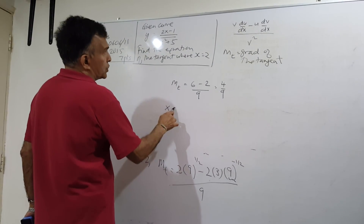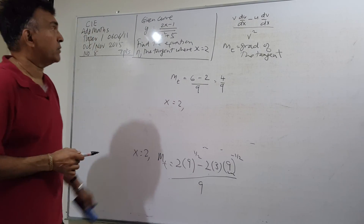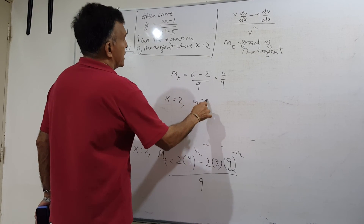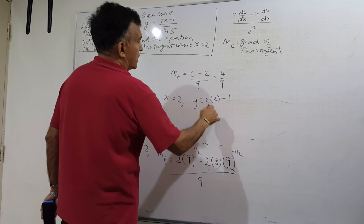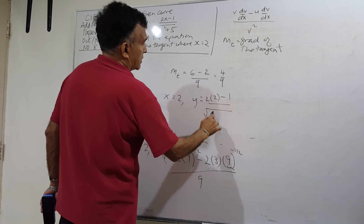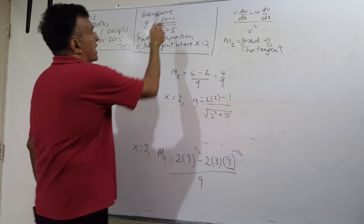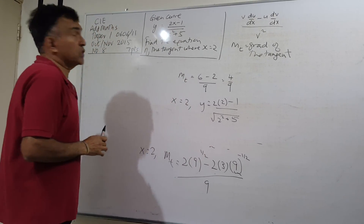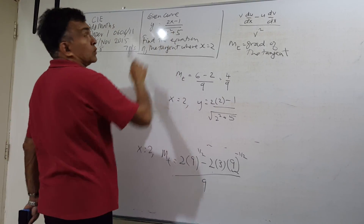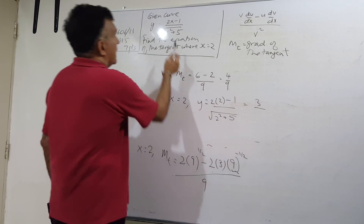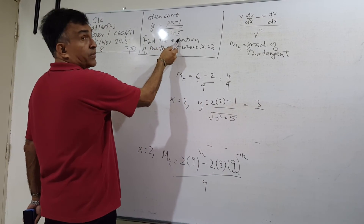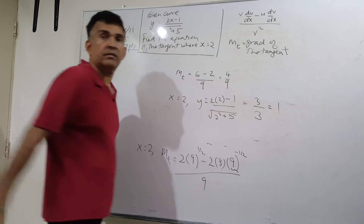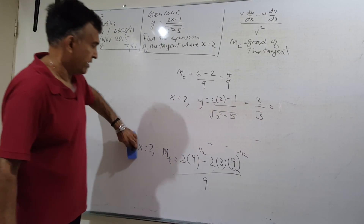We're not done yet — we need to write the equation of the tangent, we've only found the gradient. My x value is 2, so I need to find the y value. Plugging x equals 2 into the equation of the curve: 2 times 2 is 4, minus 1 is 3. Then 2 squared is 4, plus 5 is 9, square root of 9 is 3. So y equals 3 divided by 3 equals 1.